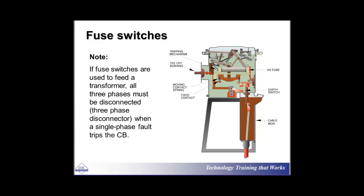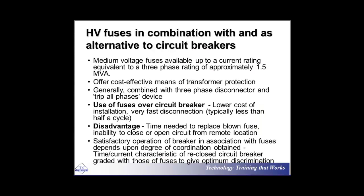If fuse switches are used to feed a transformer, all three phases must be disconnected when a single-phase fault trips the circuit. That's a must for all kinds of circuit breakers. You have a switching device on phase A, one on phase B, and one on phase C — a three-phase system. Even if you have a fault on phase B, it will not be acceptable if just phase B is disconnected while phases A and C are still working, because you will have excessive over-voltage on the other two phases and the system will automatically shut down.